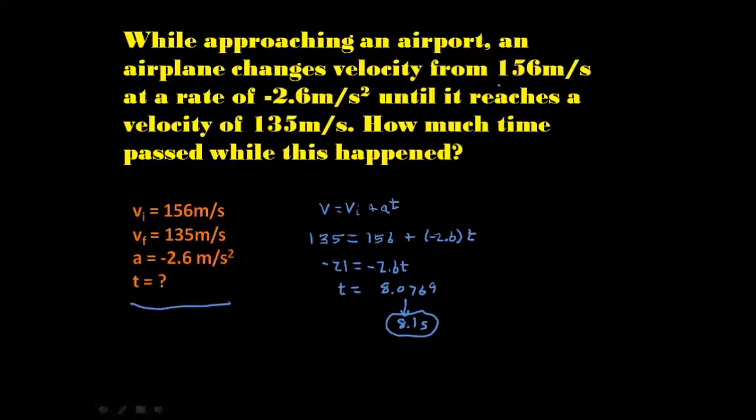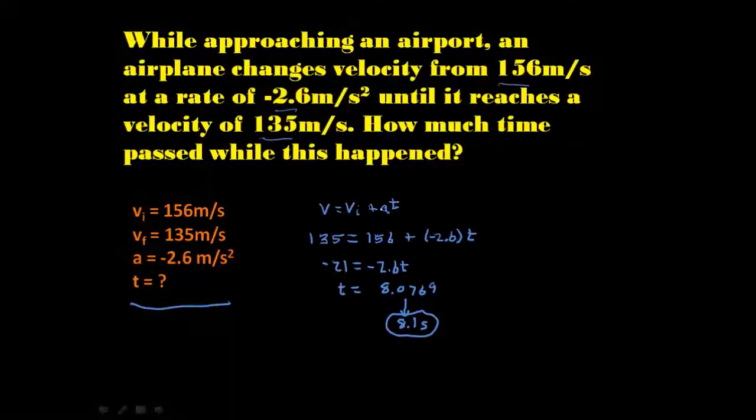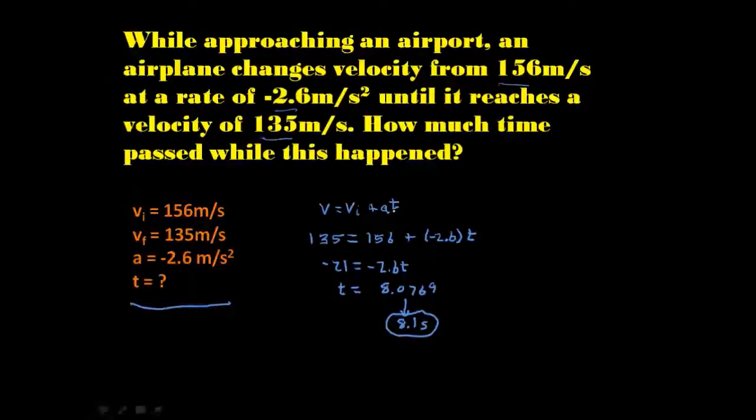It's that simple. If you remember to list your variables, pulling the information from the word problem, these are going to be so much easier for you. And that's how you work with uniform acceleration. You list the variables, and you find the formula that works, and do some algebra. All right? All right. Have fun with this. Get a little bit more practice, and you'll be great at it.